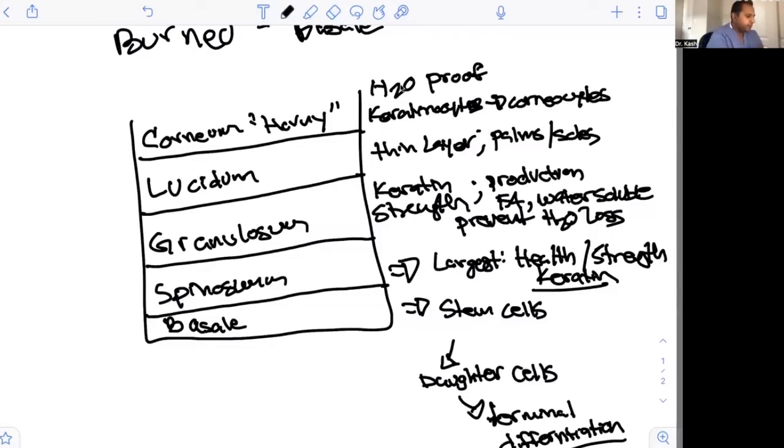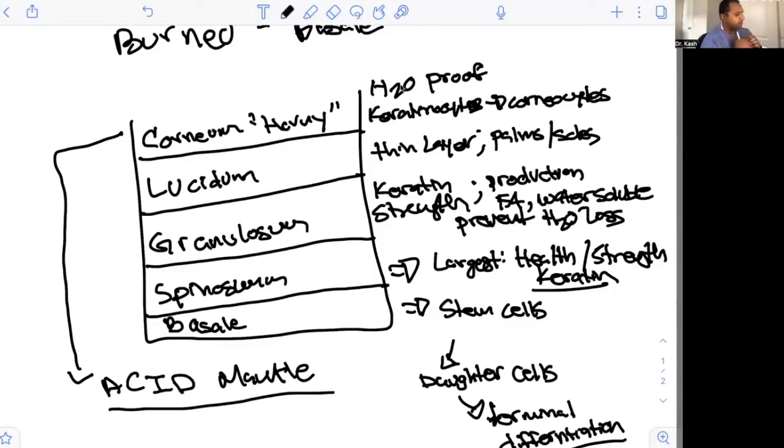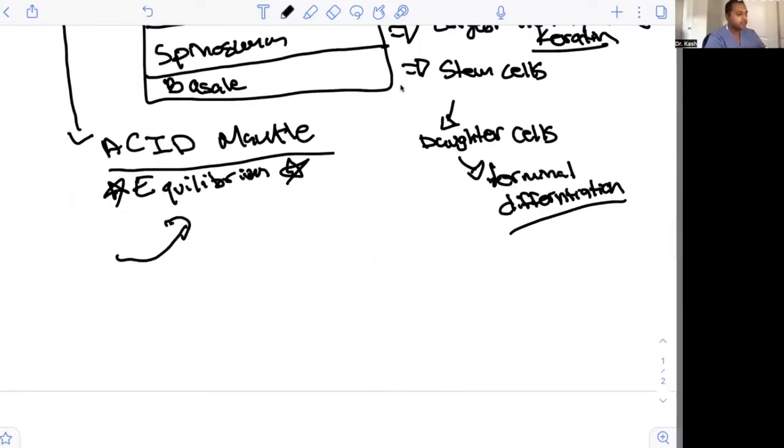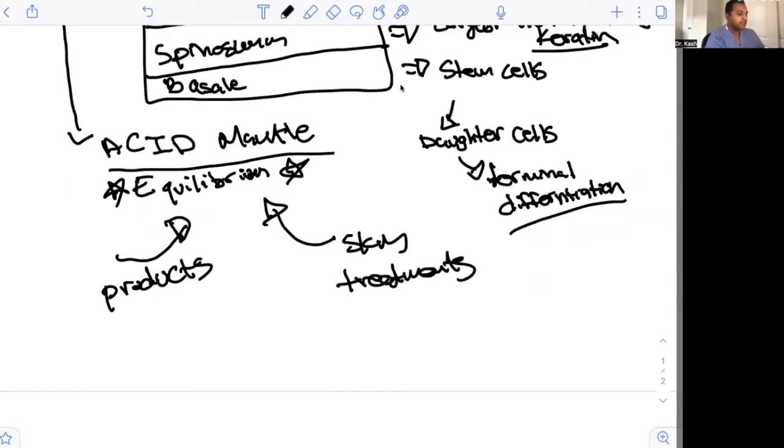This layer is very important because ultimately, this is the gateway to the acid mantle. Acid mantle is important because this is where water and nutrients are kept at an equilibrium in your skin. It allows for equilibrium. Very important. Why? Because as an esthetician, you are constantly using products and skin treatments to help maintain the acid mantle.